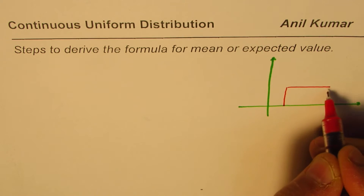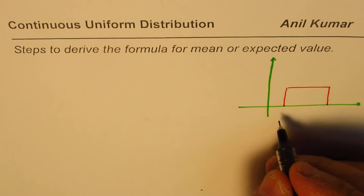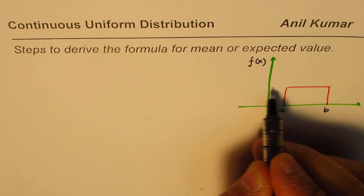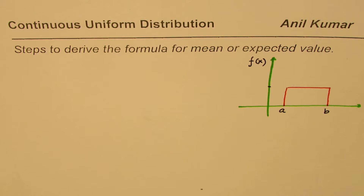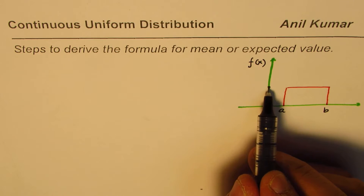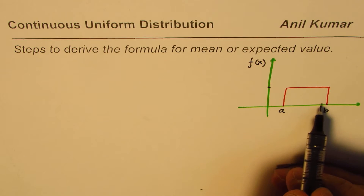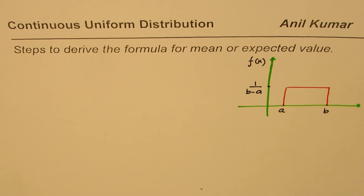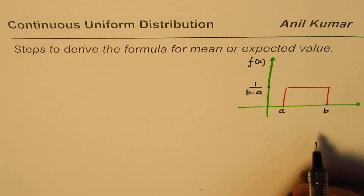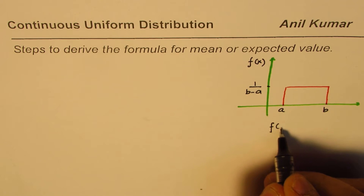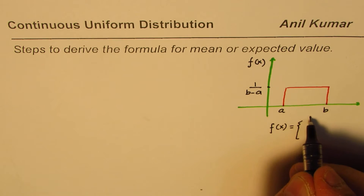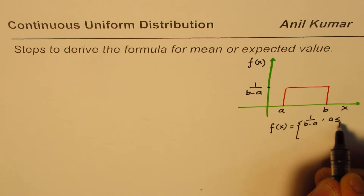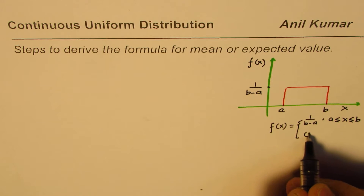The rectangle is defined between points a and b, where the random variable has a constant PDF. This value is such that the area of the rectangle is 1, so in general this value will be 1 over b minus a. So the definition is: f of x equals 1 over b minus a, for x between a and b, and equals 0 otherwise.